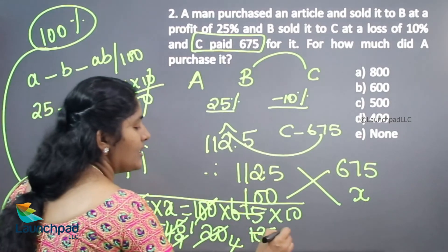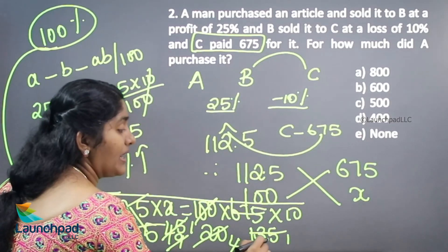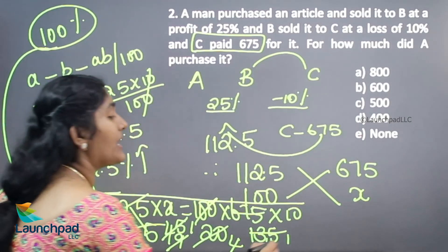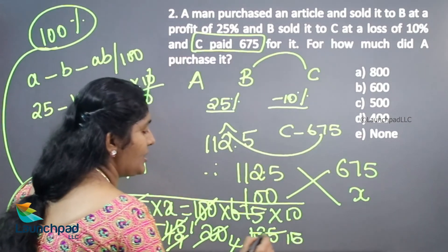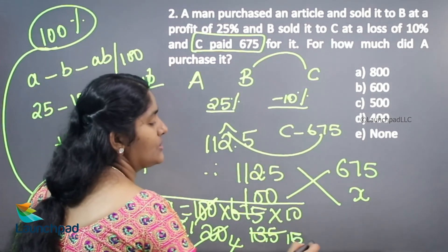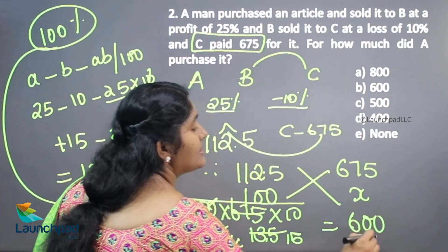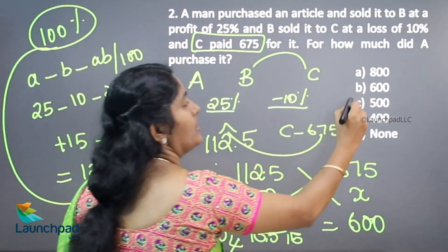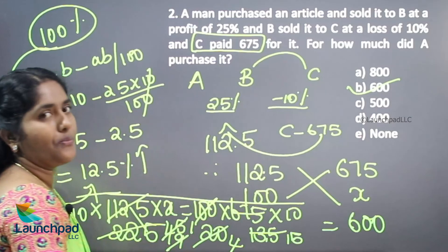15 into 4 is 60. 60 into 10, 600. Hence the A's initial amount is 600 rupees.